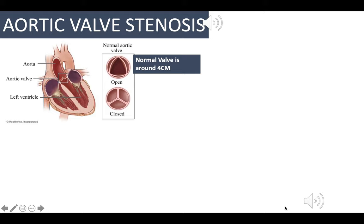The aortic valve connects the left ventricle to the aorta, which then supplies the extremities of the body. The normal valve is usually around four centimeters and normally has three leaflets. The majority of people have a tri-leaflet valve, but it is also normal for some people to have a bicuspid valve with just two leaflets.